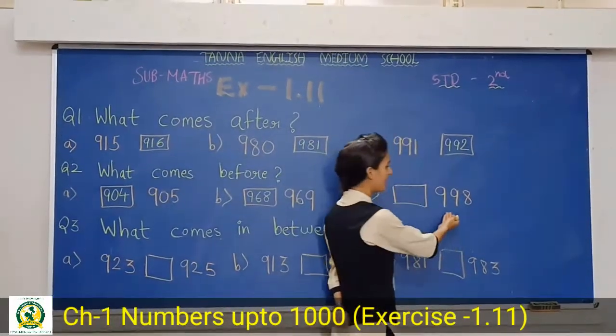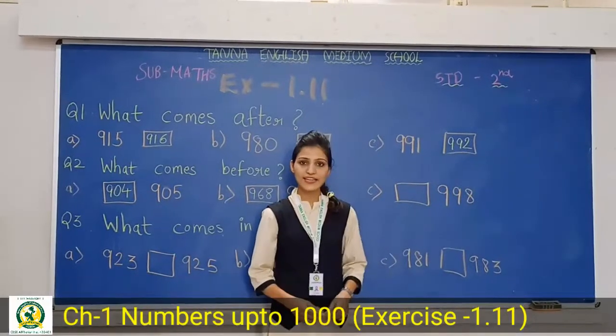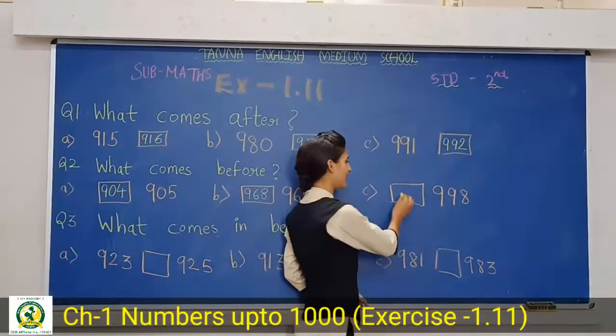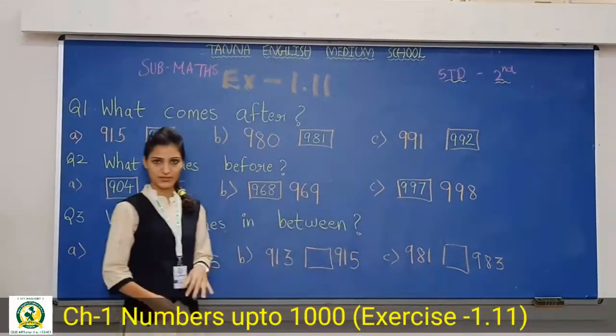Next is 998. So, what comes before 998? Right, 997. Okay? After and before numbers we have done. Now, we need to do what comes in between.